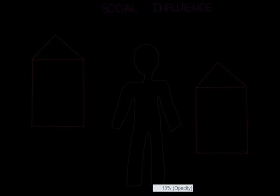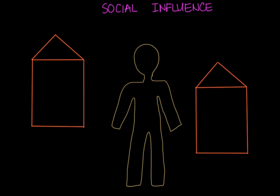Let's dive right into the last topic we're going to look at under self-identity. In this video, we're going to take a look at how imitation, roles, reference groups, and culture are all parts of social influence, which falls under the branch of social psychology. Social influence is a major topic in social psychology, and it looks at how individual thoughts, actions, and feelings are influenced by social groups.